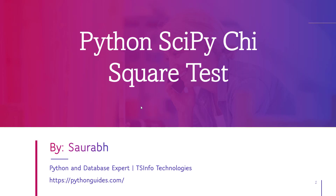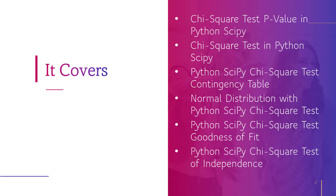Let's see what we are going to learn in this video. First we will understand chi-square test p-value in Python SciPy. After this we will know about the chi-square test in Python SciPy. Then we will understand Python SciPy chi-square test contingency table and we will also learn about normal distribution with SciPy chi-square test.